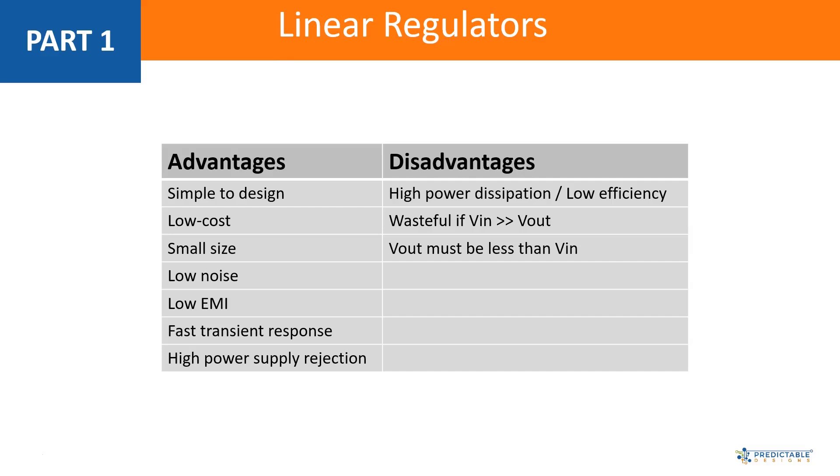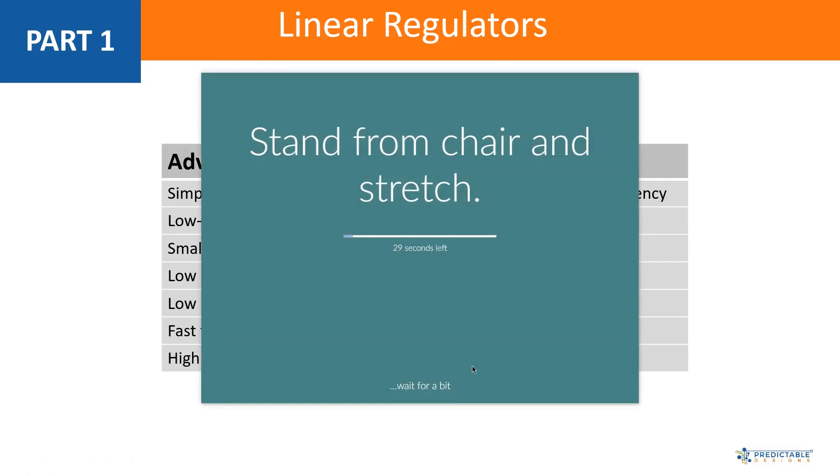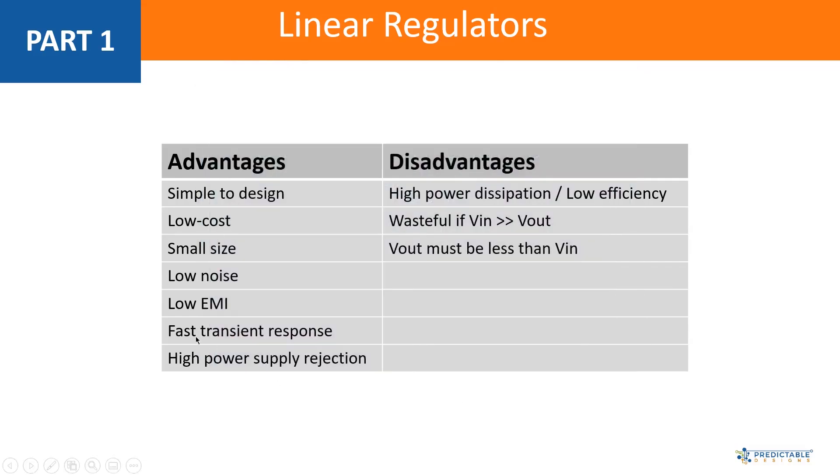So power supply rejection is the ability of the regulator to reject whatever happens on the input voltage. So if you have a regulator taking 5 volts and converting it down to 3, and all of a sudden that 5 volts spikes up to 6 volts briefly, you don't want the output voltage to change. You want the regulator to be able to reject anything that's happening on the power supply that's powering the regulator. And that's what this high power supply rejection means. Whereas low noise is the actual physical noise that the regulator creates, which is much lower than it will be for a switching regulator.